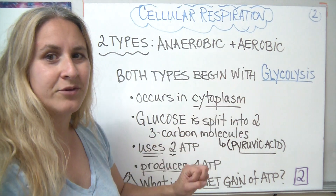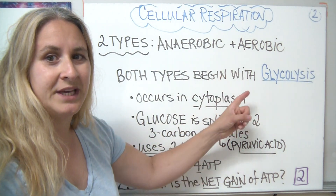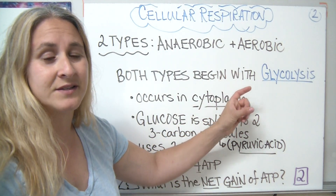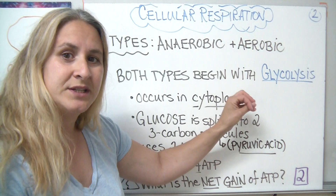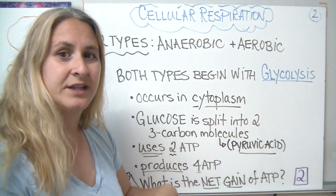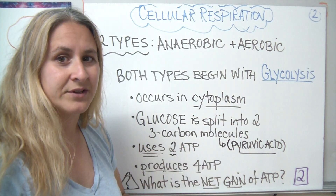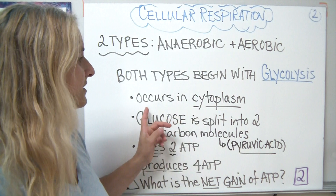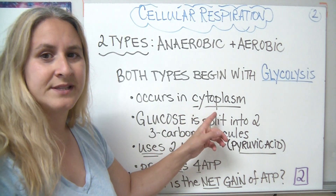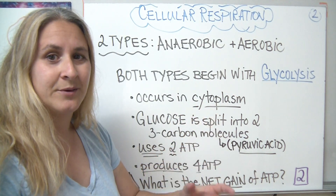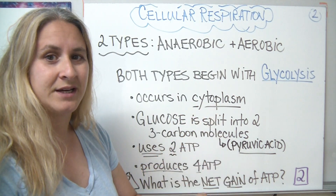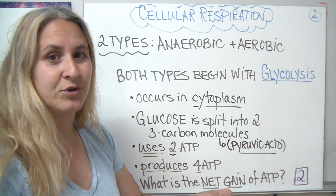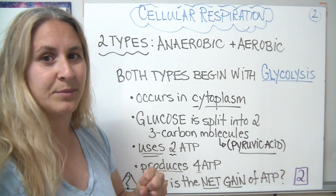Both types of cellular respiration begin with a process called glycolysis. We're going to discuss glycolysis first and then tie everything together. Glycolysis occurs in the cytoplasm. Remember we said that we have a lot of enzymes in the cytoplasm and a lot of chemical reactions happen there.